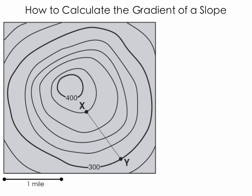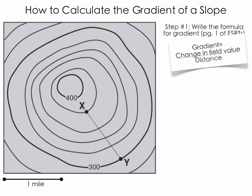Now the best place to start is of course with the formula, so we should all record the formula for gradient, which can be found on page one of the reference tables. There you will see that gradient is equal to the change in field value divided by the distance.